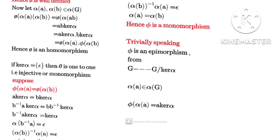If the kernel of α is trivial, then φ is one-to-one, that is injective or a monomorphism. Supposing α(a) equals α(b), this implies a·ker(α) equals b·ker(α). Taking the inverse of both sides, b⁻¹a·ker(α) equals ker(α), and moving b⁻¹ to the other side gives α(a) equals α(b), confirming that φ is a monomorphism.